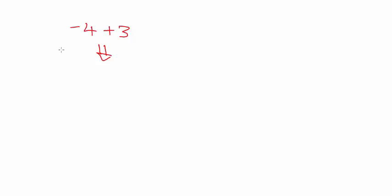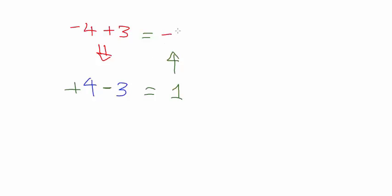Flip the signs of both numbers. So minus four plus three becomes plus four minus three - you've flipped the signs. A lot of people are happy with plus four minus three, which is one. Your actual answer will just be the opposite of that answer.